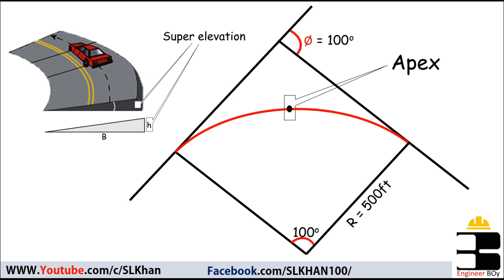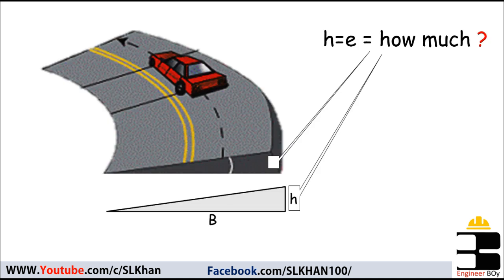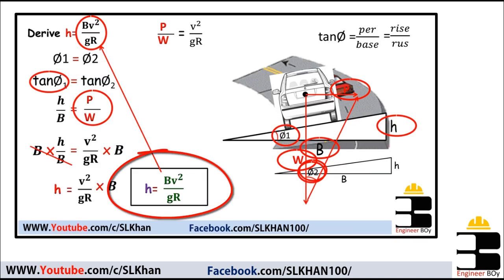Now, what should be the value of full super elevation? For this approach we can use the following formula: e = bv² / gr. This formula was derived in the previous class, so if you want the derivation, you can watch that video — the link is down below in the video description.